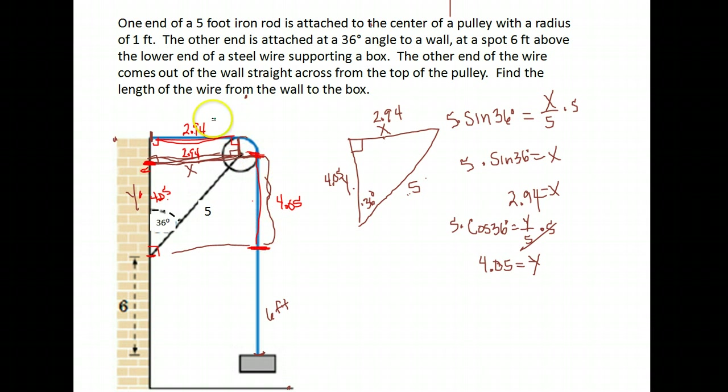So far for my distance, I have 2.94, then I'm going to have this arc length that I have to find, then 4.05 and 6. So the length of that wire is 2.94 plus my arc length plus the 4.05 plus the 6 feet. All we're missing here is the arc length and some addition.